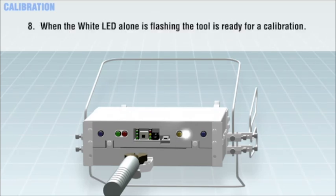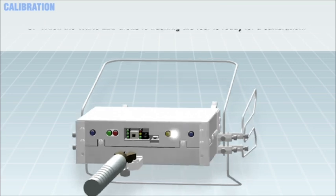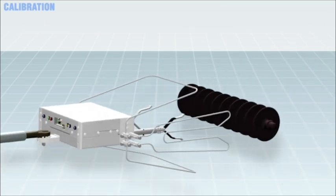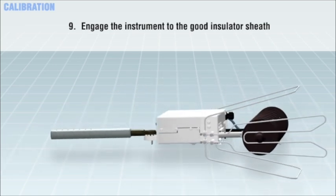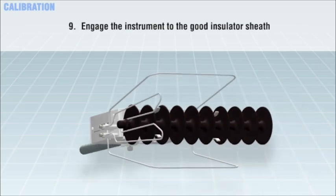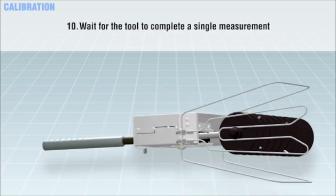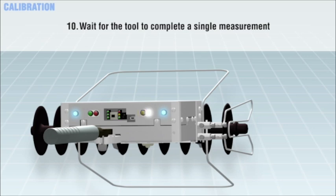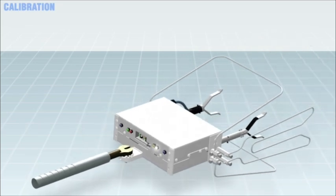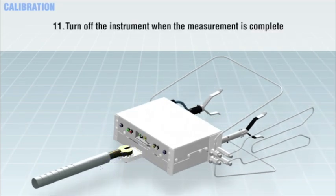When the white LED alone is flashing, the tool is ready for calibration. Engage the instrument to the good insulator sheath. Make sure that no hands or foreign objects are close to the V-probes, guard, or bonding electrodes. Wait for the tool to complete a single measurement as described in the previous section, followed by the white LED being lit continuously. There will be no green or red LED light as you would have with a normal measurement. Turn off the instrument when the measurement is complete in order to store the calibration. The unit does not load the new calibration values until it is power cycled.